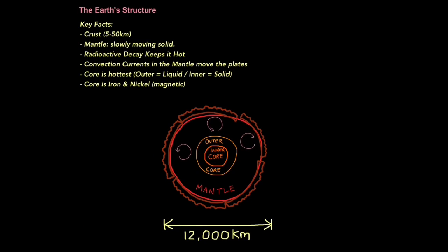So just a quick summary of the key facts. The crust is 5 to 50 kilometers deep, and it's the outer layer of the earth. The mantle acts as a slowly moving solid. Radioactive decay keeps it hot. There are convection currents in the mantle that move the plates. The core is hottest, the outer part is referred to as liquid, and the inner a solid. The core is iron and nickel, which makes it magnetic, and therefore gives the earth a magnetic field.